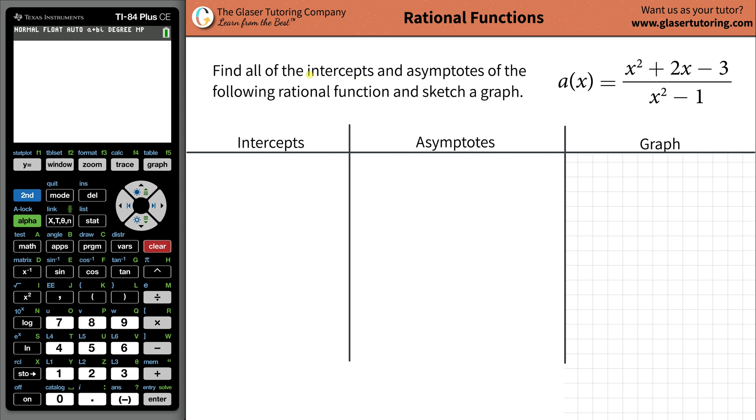Hi, I'm Andrew. Today I'd like to teach you how to find all the intercepts and asymptotes of the function x² + 2x - 3, which is all being divided by x² - 1. And then we're going to sketch a little bit of a graph.